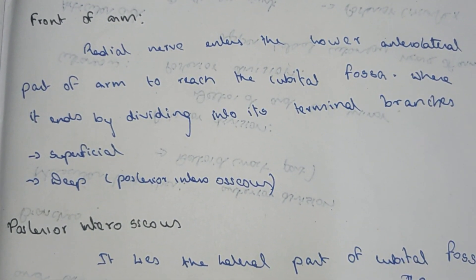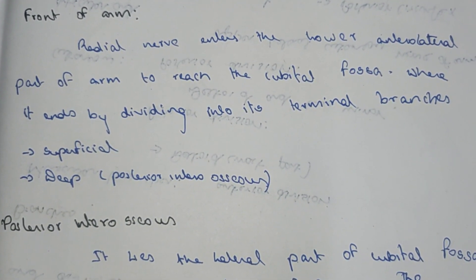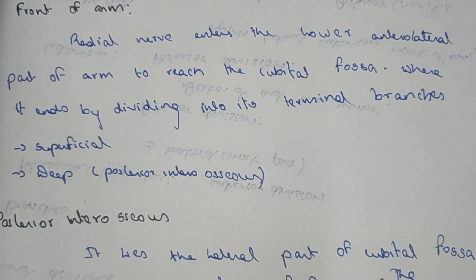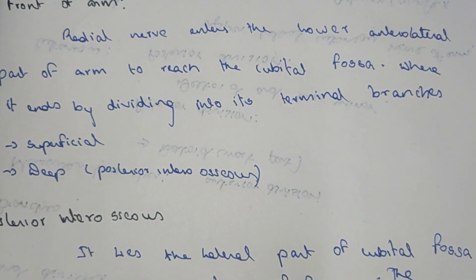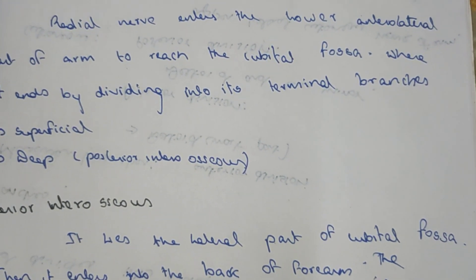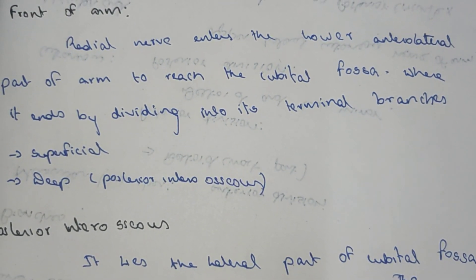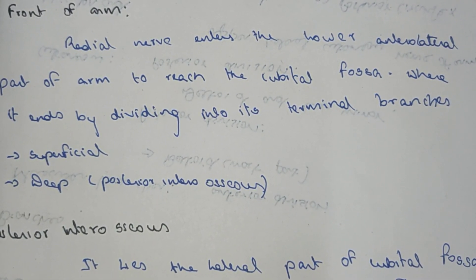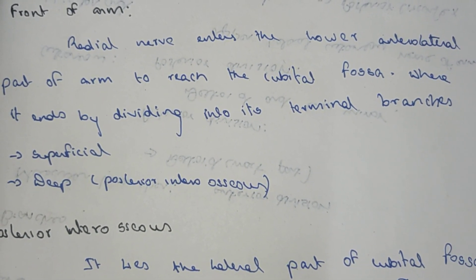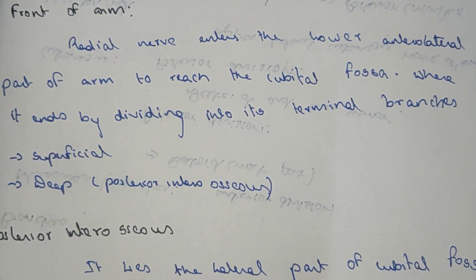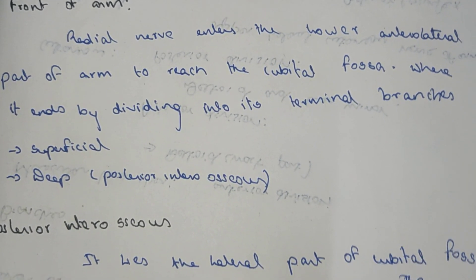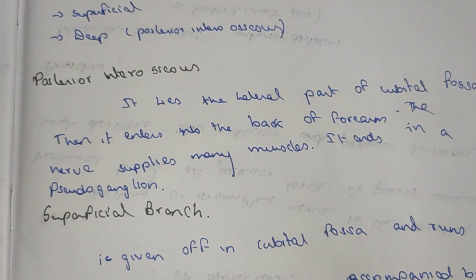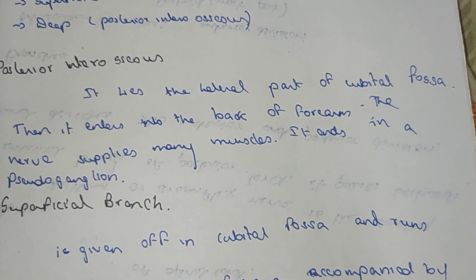The radial nerve enters the anterolateral part of the arm and reaches the cubital fossa. From the cubital fossa it divides into two branches: the superficial part and the deep part. The deep part is otherwise known as the posterior interosseous nerve.